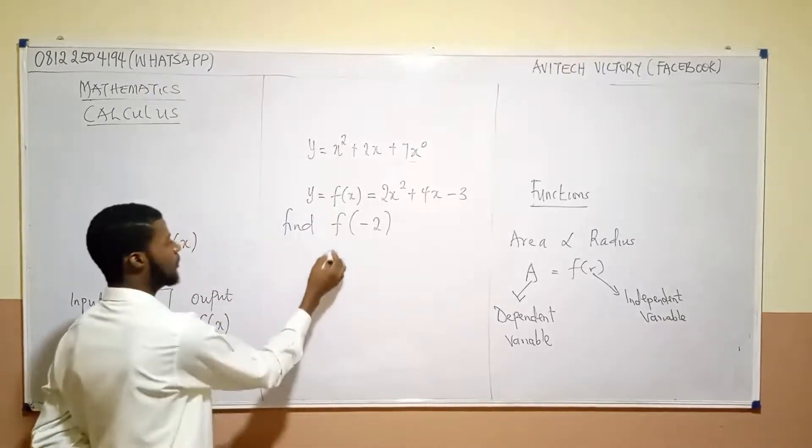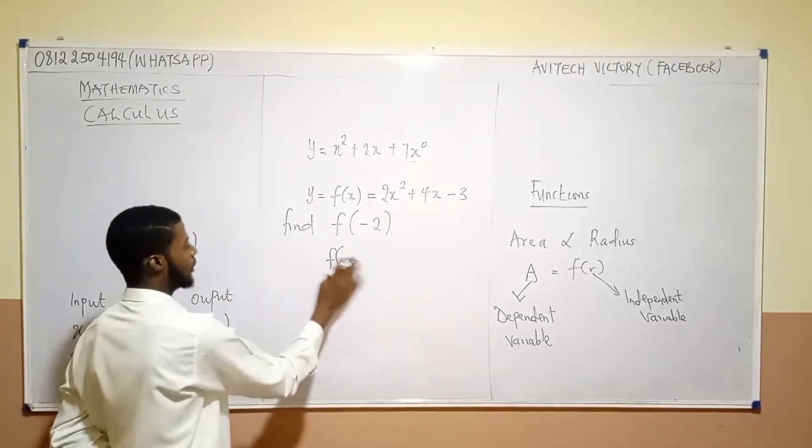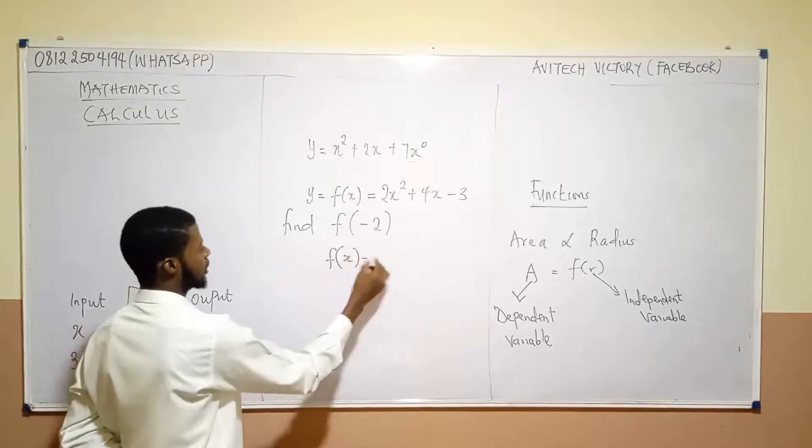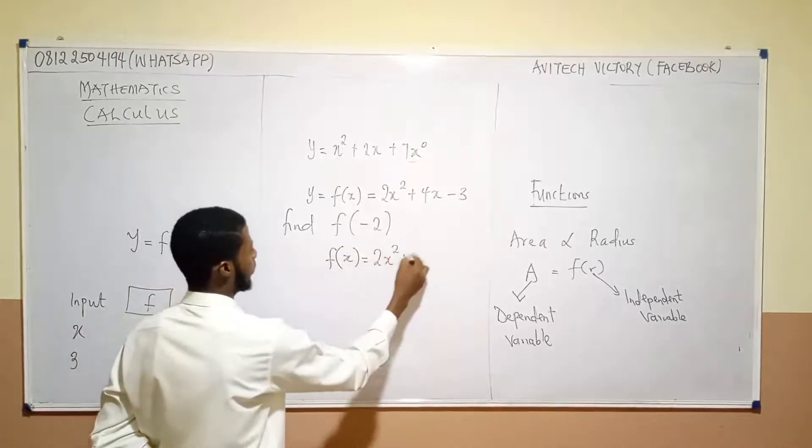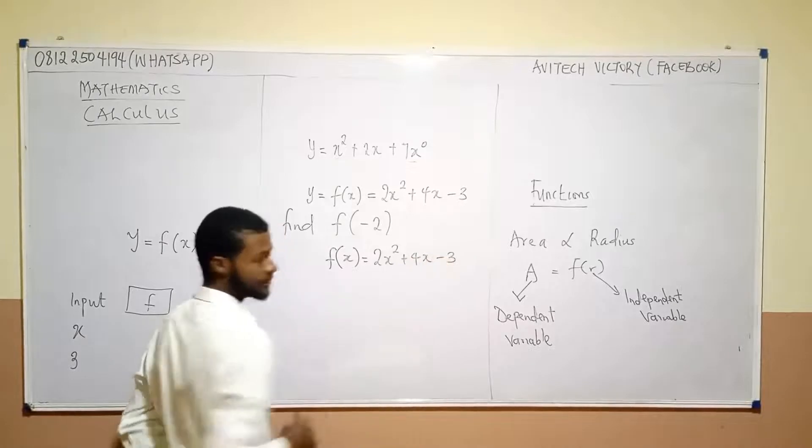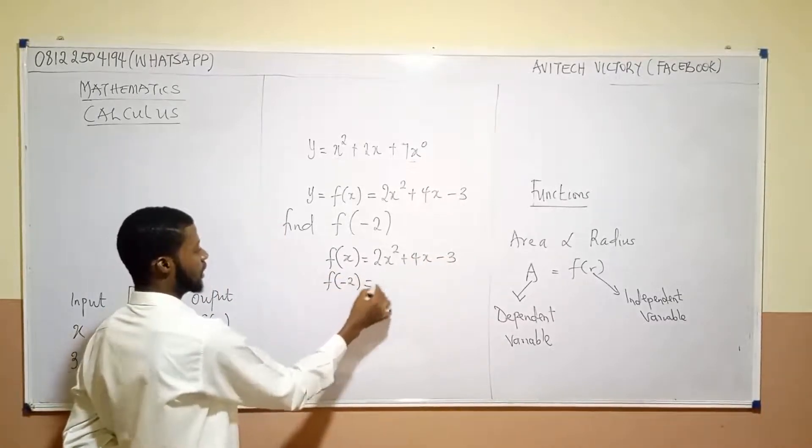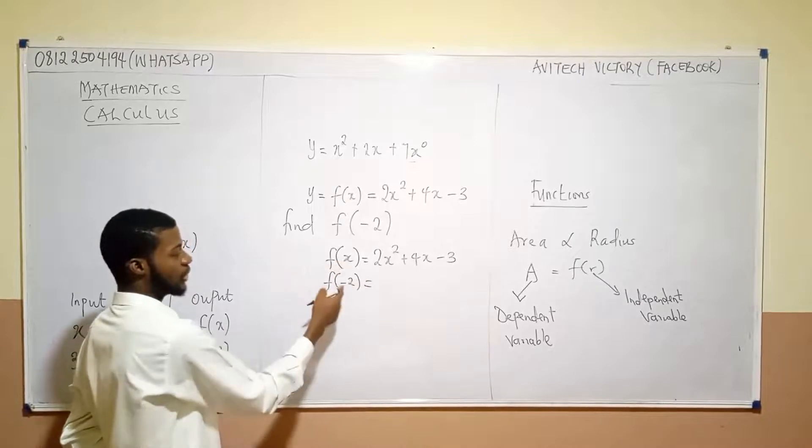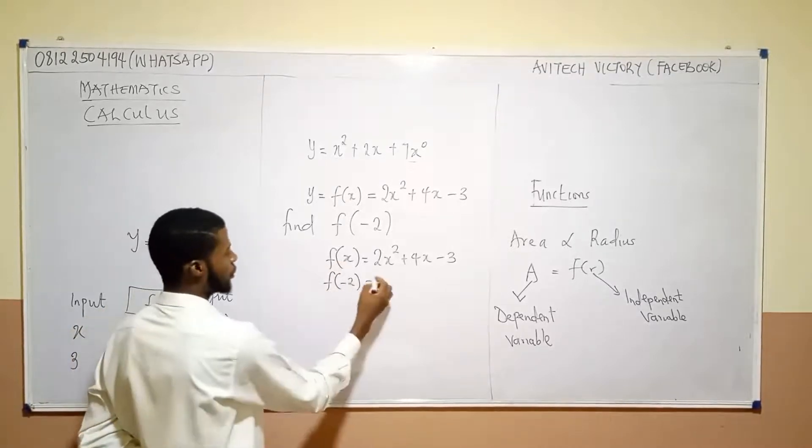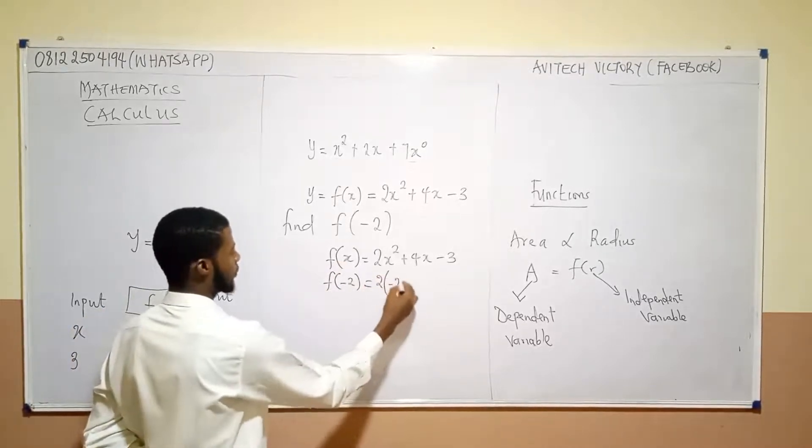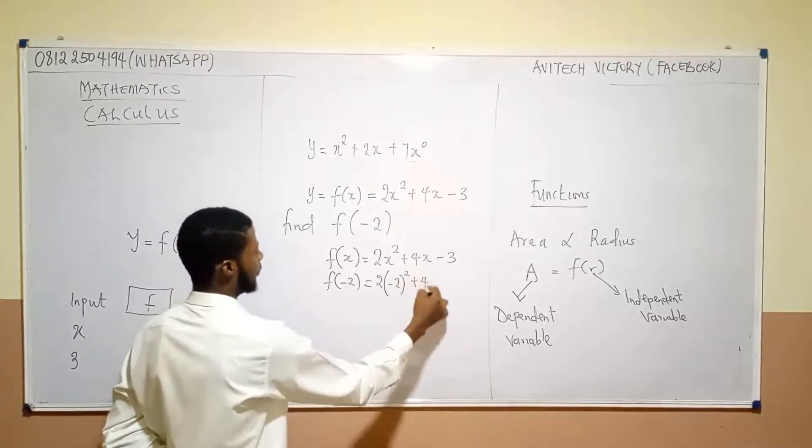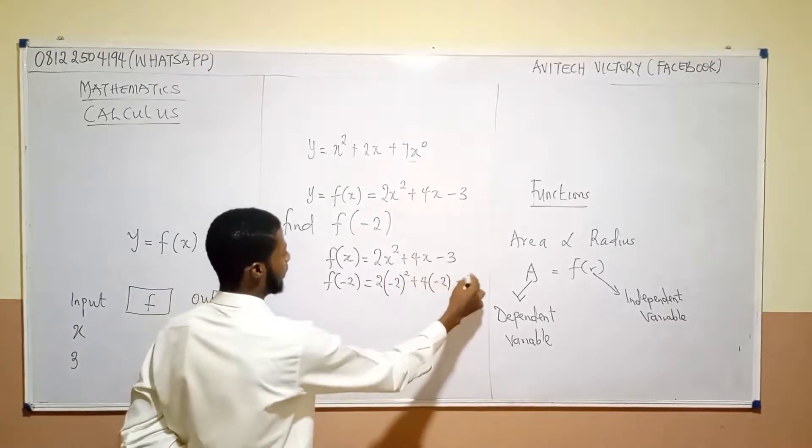So, first of all, we have been told that f of x is equal 2x squared plus 4x minus 3. So, what would then become f of minus 2? Simply put, that x would then become minus 2. So, this would then become 2 bracket minus 2 squared plus 4 bracket minus 2. Then, minus 3.